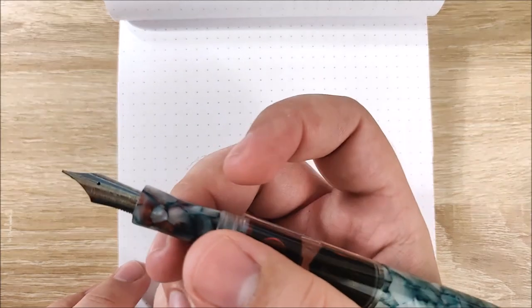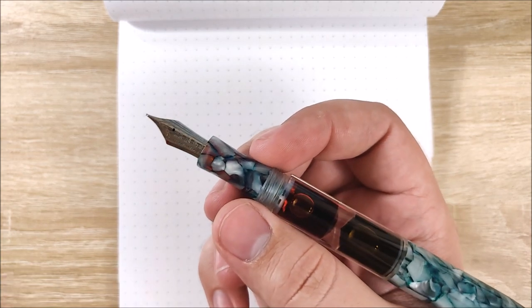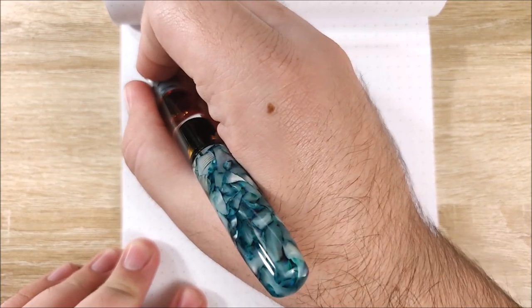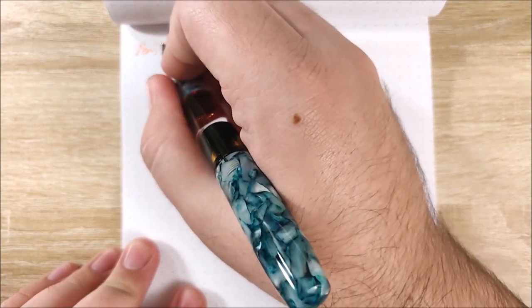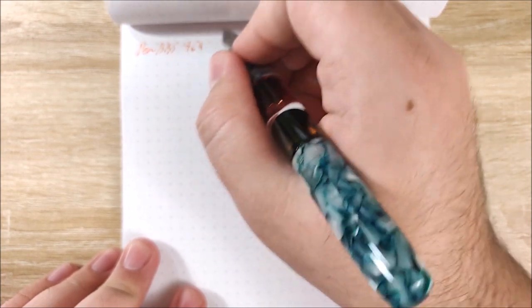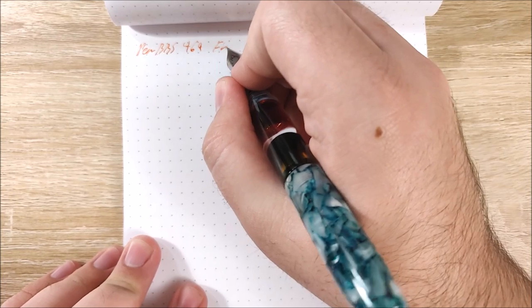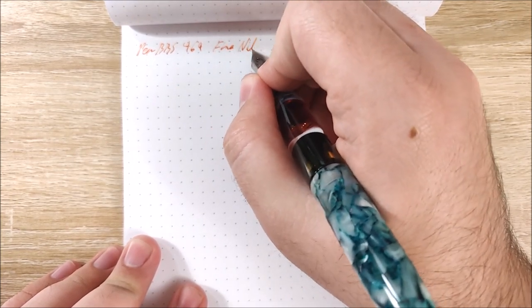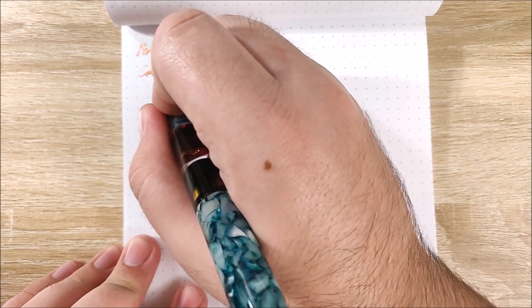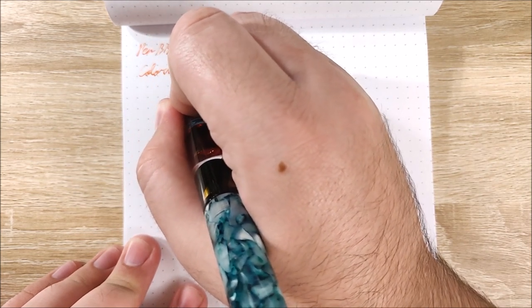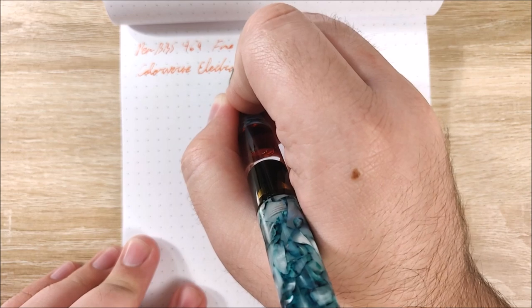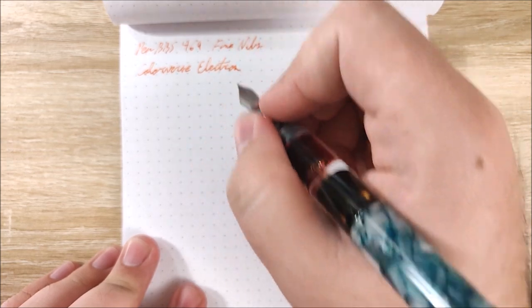All right, on to the writing sample. So first up is going to be this silver nib, again, both of these are fine nibs. This one has Colorverse Electron in it. So we have the Pen BBS 469, again, these are fine nibs. And this one has Colorverse Electron, which is a really nice orange ink that I like quite a bit.